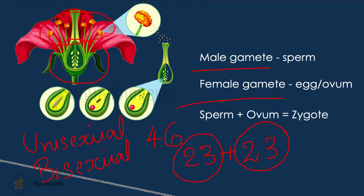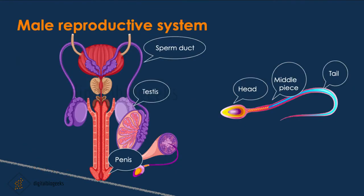Let's learn more about sexual reproduction in humans. Humans have a male reproductive system and a female reproductive system. In the male reproductive system, there are two testes. The testes produce sperms — millions of sperms are produced. Sperms travel through the sperm duct into the urethra and then through the penis. A sperm contains a head, a middle piece, and a tail. They are very small, single-celled, and because of the tail, sperms are motile.